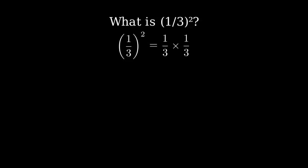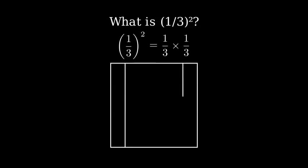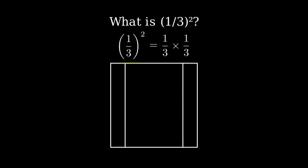Let's visualize this with a square. Here's a square that represents one whole unit. If we divide it into three equal vertical parts, one-third looks like this.